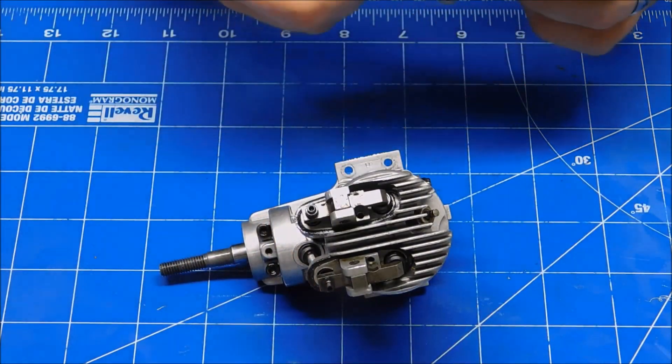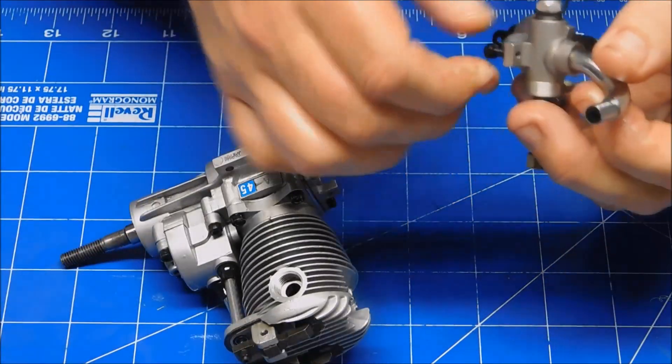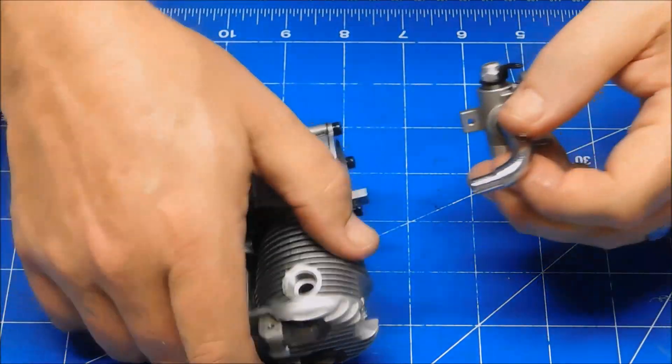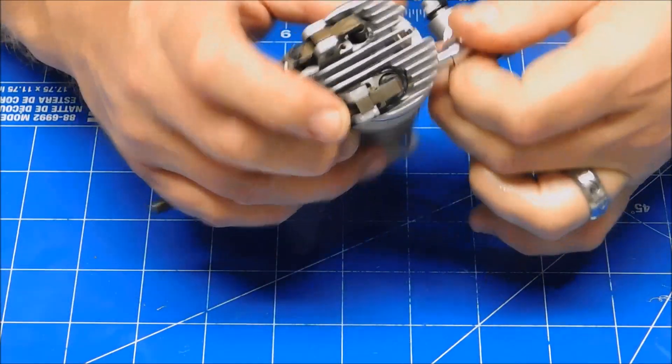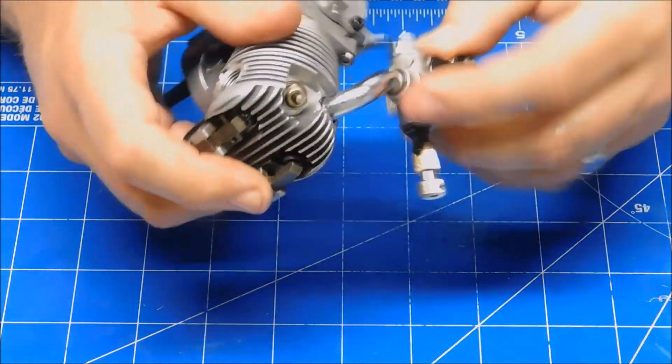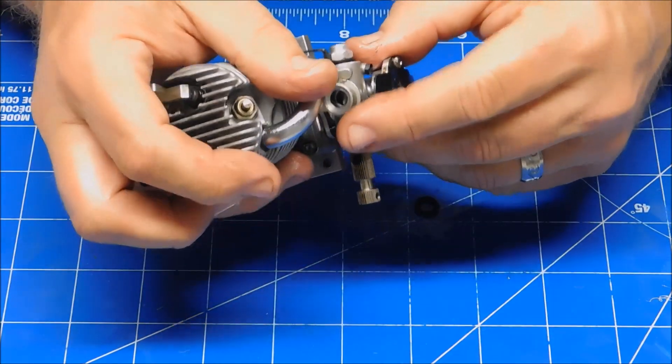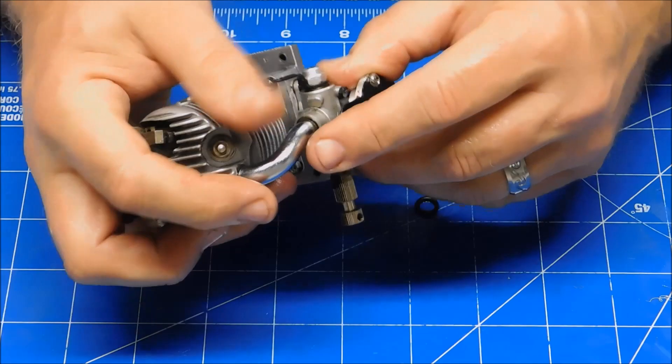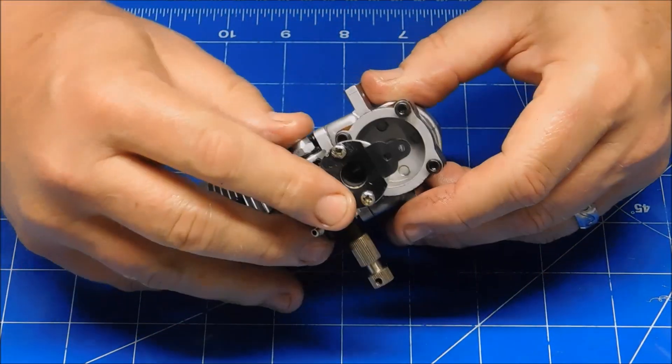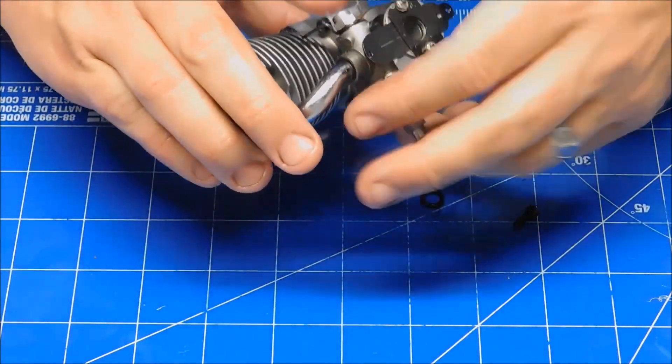The next thing would probably be put our carburetor on. We need this screw here. The question is, do I go on the top or the bottom? A little guide. Oh wow, where did that come from?